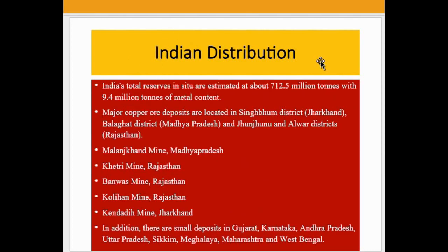Regarding India's distribution, India's total reserves are estimated at about 712.5 million tons with 9.4 million tons of metal content. Major copper ore deposits are located in Singhbhum district, Jharkhand; Balaghat district, Madhya Pradesh; and Jhunjhunu and Alwar districts, Rajasthan. India's five biggest mines are Malanjkhand mine in Madhya Pradesh, Khetri mine in Rajasthan, Banwas mine in Rajasthan, Kolihan mines in Rajasthan, and Kendadih mine in Jharkhand.